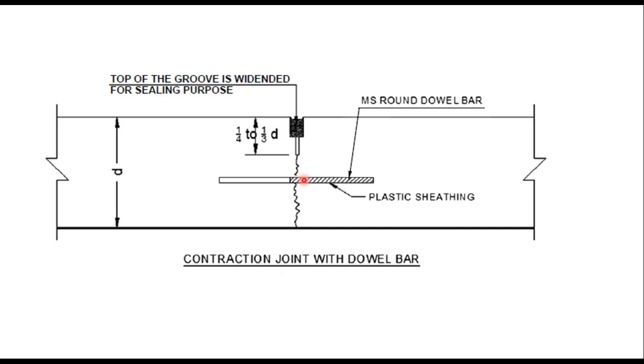For high volume roads, contraction joints are provided with dowel bars to improve the continuity of the slab and improve the performance of the joint.